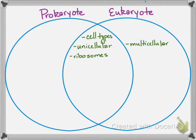Both have ribosomes. Ribosomes are so essential to cells because they are able to link amino acids together to form proteins. You have to have proteins for things like enzyme action, and we really need enzymes for life to exist. So ribosomes are essential, and they are found in both prokaryotes and eukaryotes.